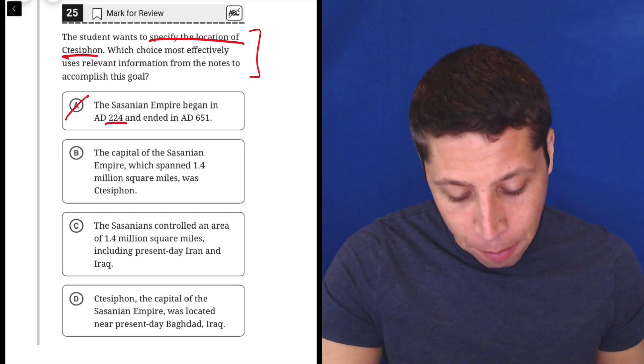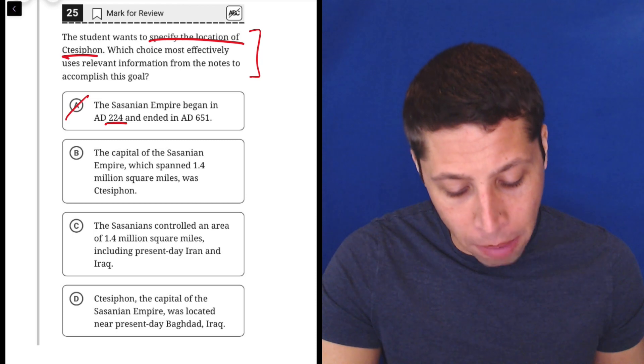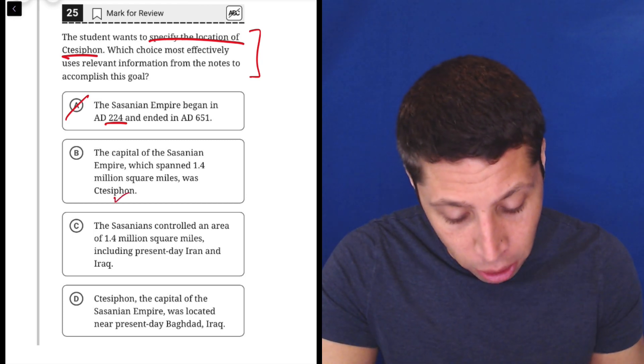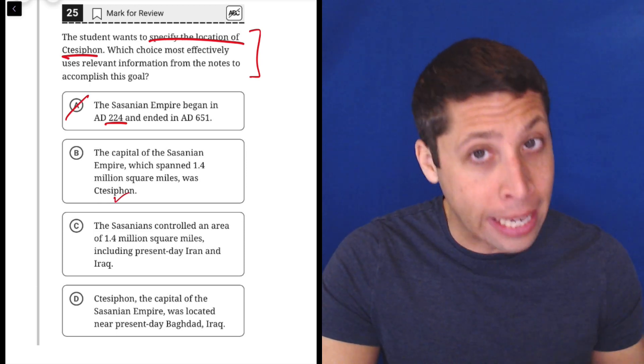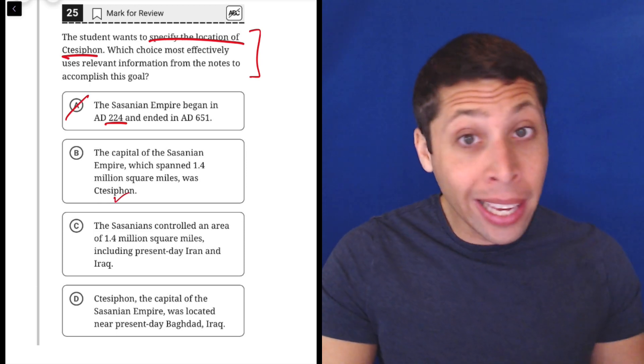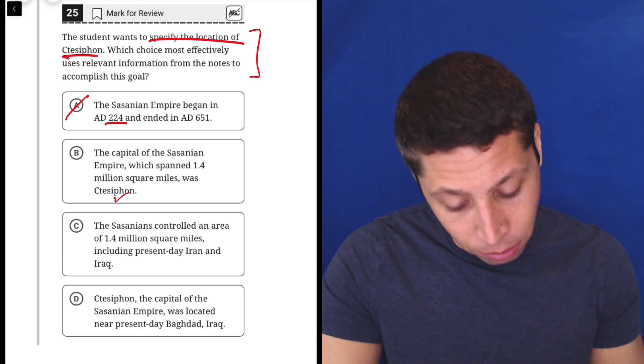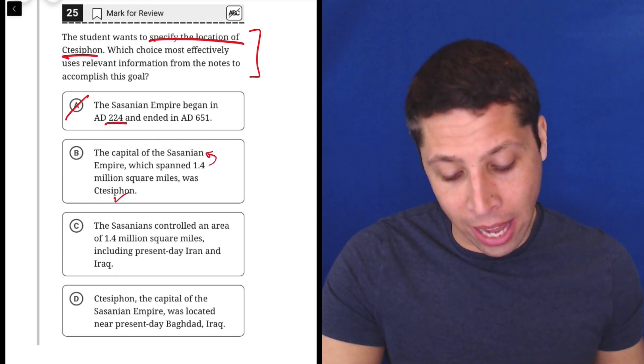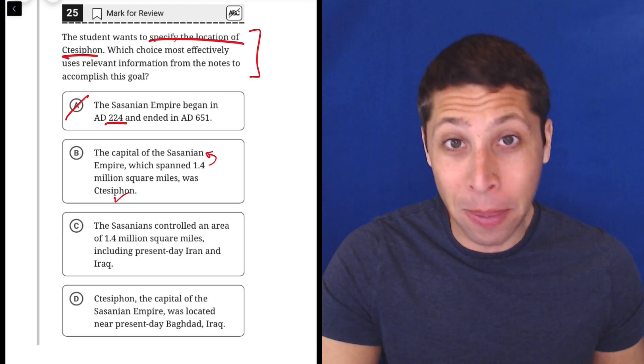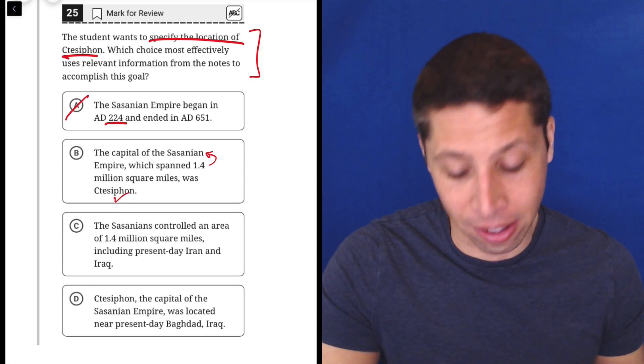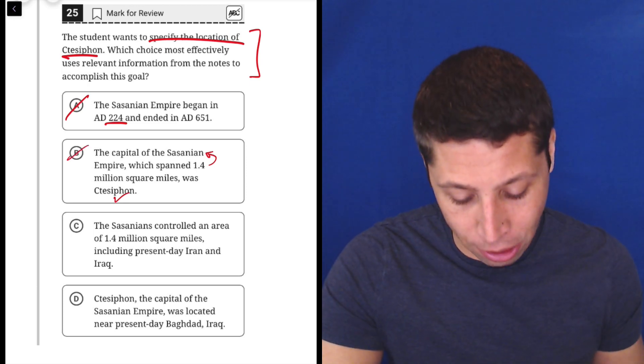The capital of the Sassanian empire, which spanned 1.4 million square miles, was Ctesiphon. Well, it's talking about that, so that's good, but is it really saying where it is? It's saying how big it is, but I don't think so. Actually, it's not even doing that. It's describing how big the empire is. So it's not even really talking about the city's size. So this is wrong. It's not giving us the location.